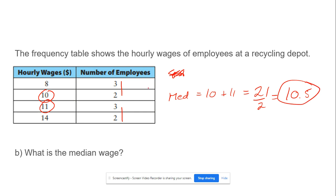Does that make sense? Just to show this another way, if we have 8, 8, 8, 10, 10, 11, 11, 11, 14, 14. If we cross out these first three, cross out these last three, cross out this one, cross out that one, we're left with these two numbers. So the number has to be in the middle, which is 10.5.